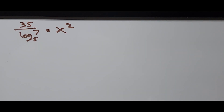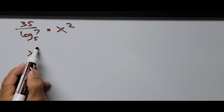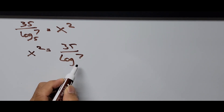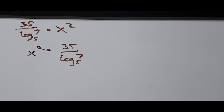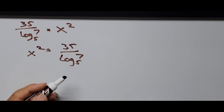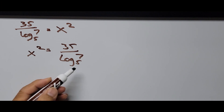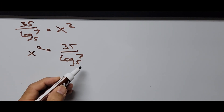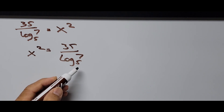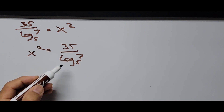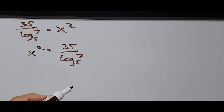Switching positions, x squared equals 35 divided by log of 7 base 5. Now if you notice, the denominator on the right side of the equation is in terms of base 5. To find the value of x, we have to change this base 5 to base 10 so we can use our calculator to find the exact decimal value of x.